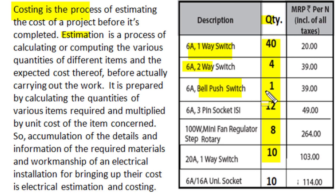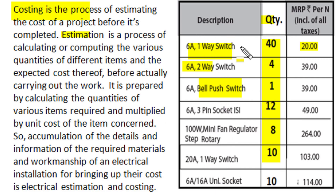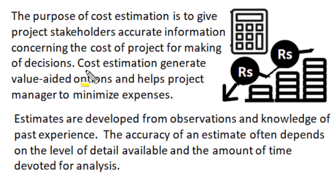Costing becomes simple — we just multiply item cost with quantity and sum up all the items. So we can say the accumulation of detail of required material and workmanship for execution of any electrical installation, so as to obtain the cost of the project, is called electrical estimation and costing.